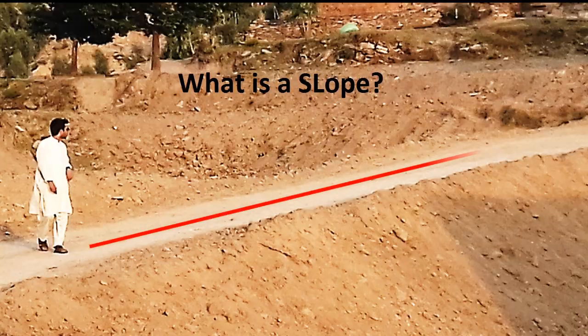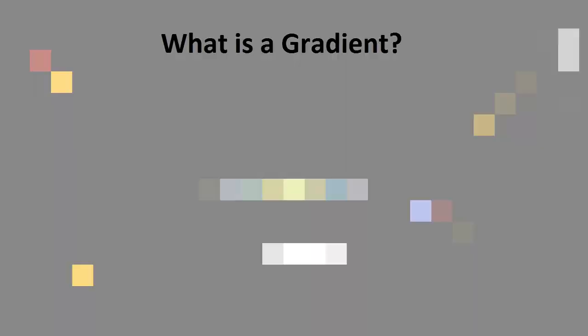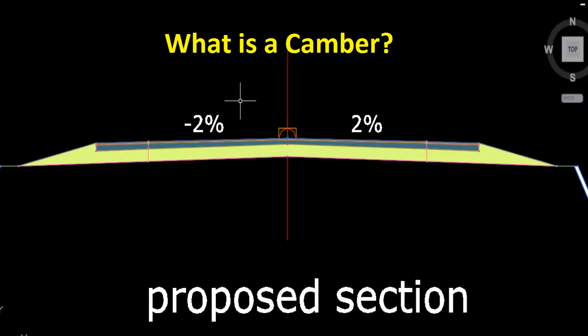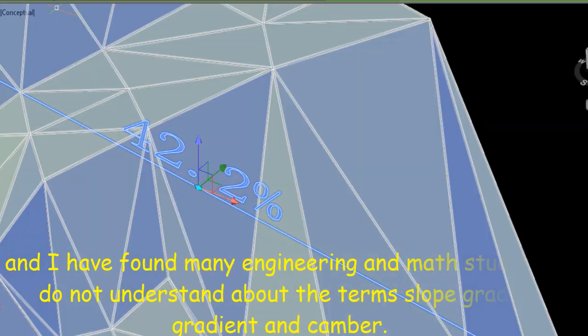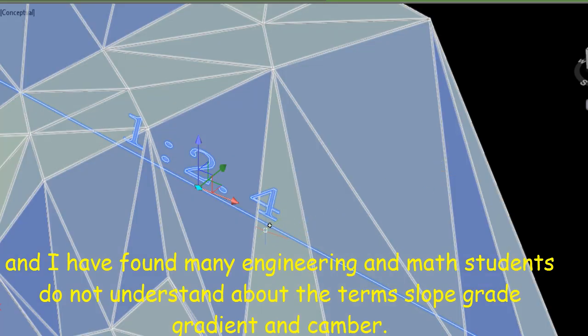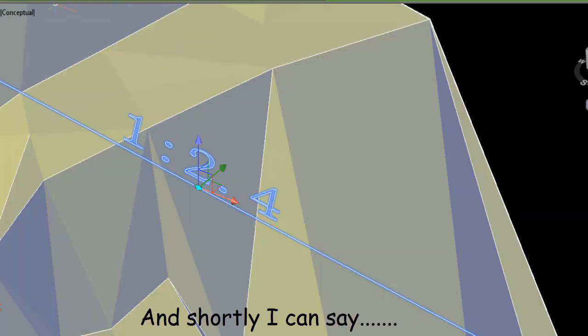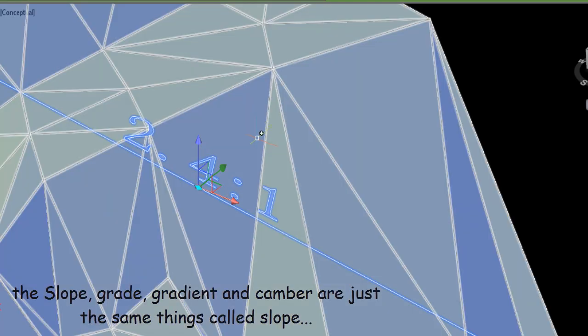What is slope, gradient, and camber? There are some misunderstandings, and I have found many engineering and math students do not understand these terms. Slope, gradient, and camber are just the same thing.